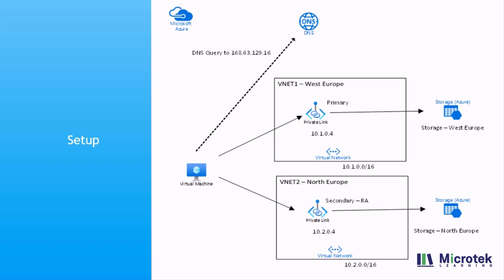As you can see on screen, the setup is as follows: you have a virtual machine, a storage account, and a private endpoint configured. When you perform a failover from primary to secondary, the primary becomes unavailable and the secondary takes over. When the secondary takes over, it becomes LRS, which is locally redundant. During that time, one of the private endpoint IP addresses will not be available at all.